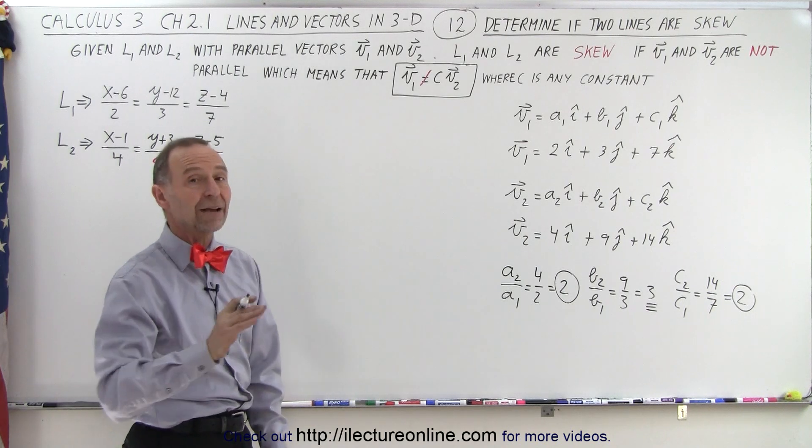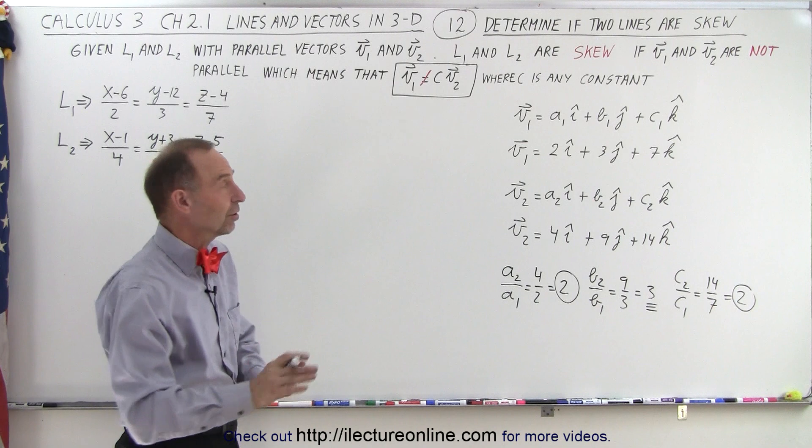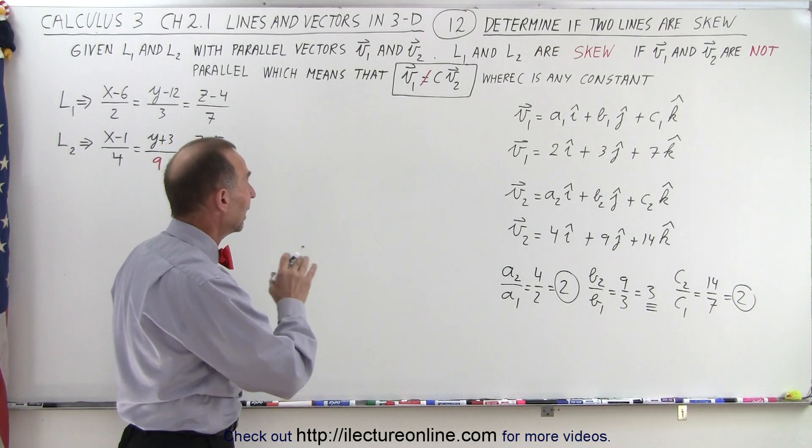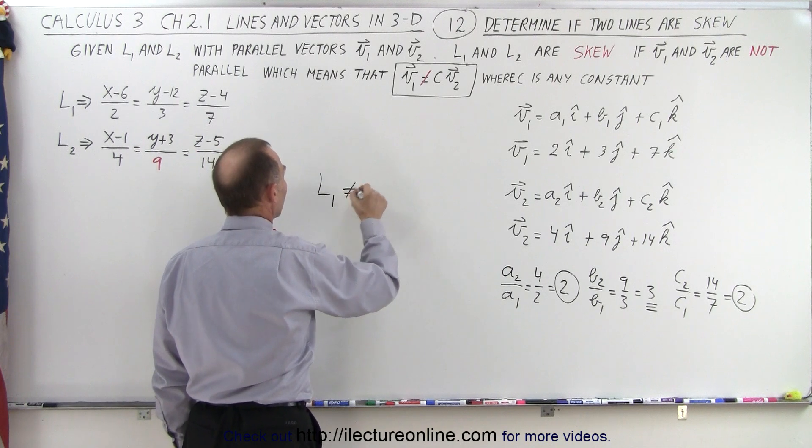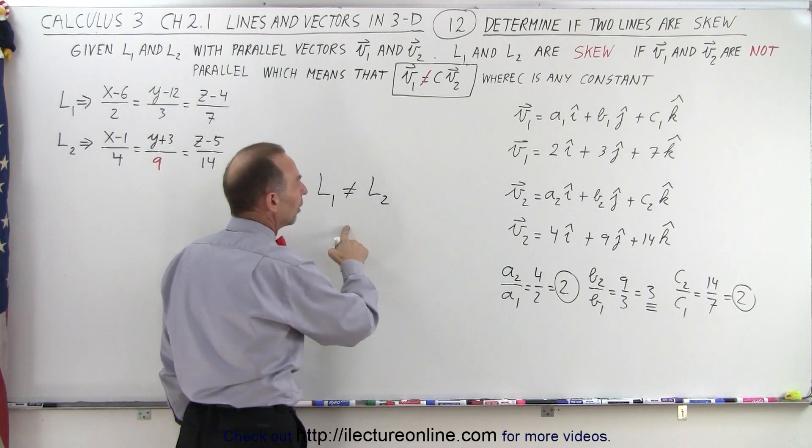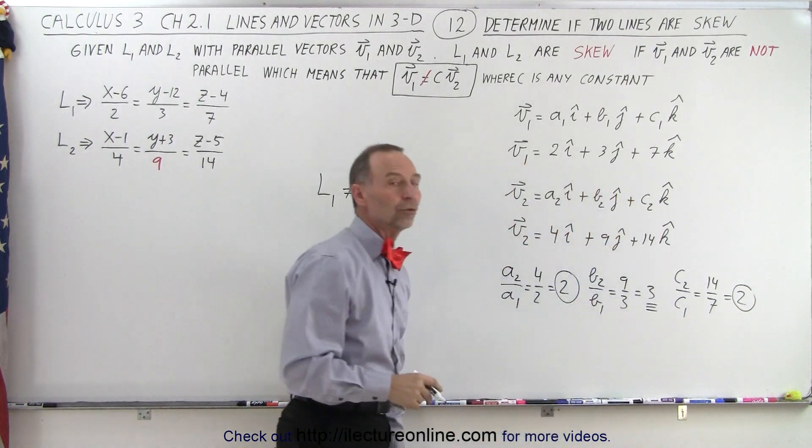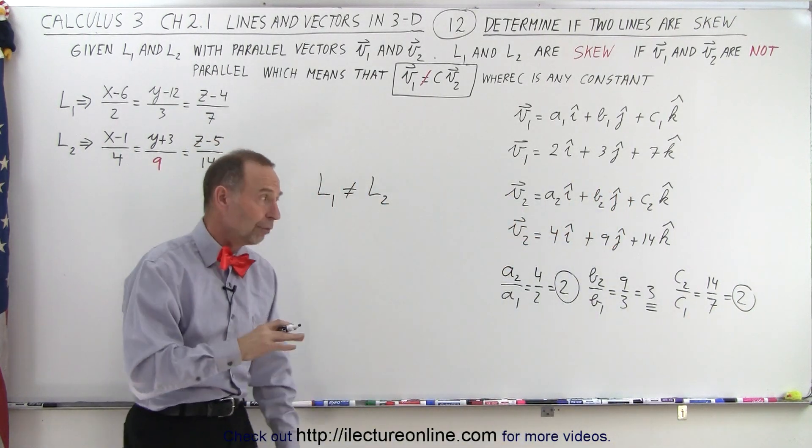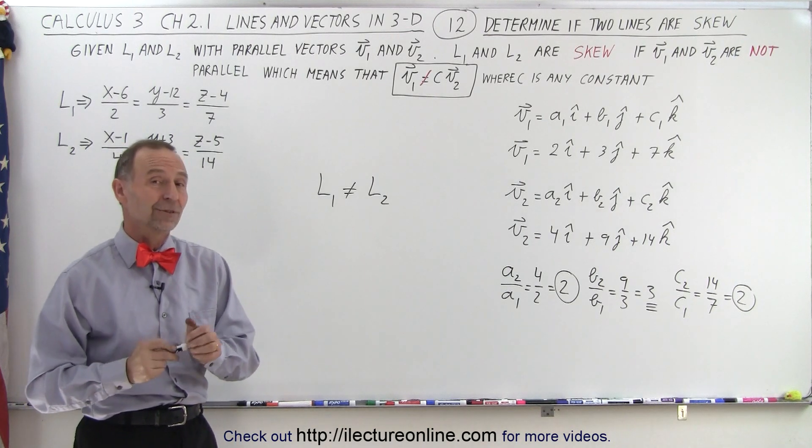If all three of them don't have the same ratio, then we know those two vectors are not parallel to each other, and therefore L1 and L2 are not parallel to each other. So we can say that L1 is not parallel to L2 because we know that each of the three components of the two vectors do not have the same ratio. And that is how it's done.